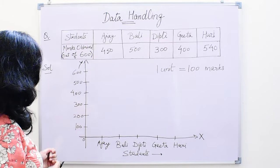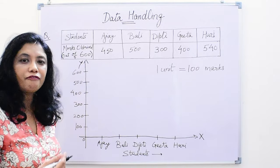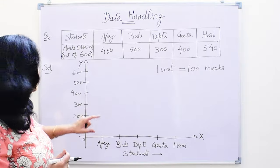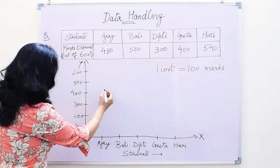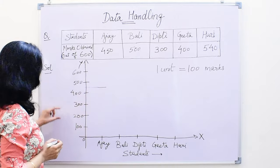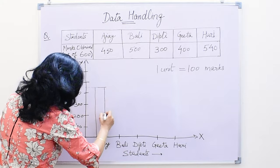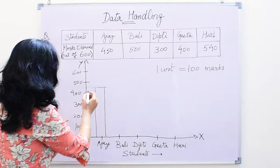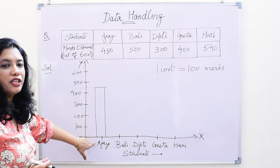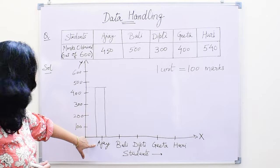Now we will plot the marks. Ajay has got 450 marks, so 450 means it will lie between 400 and 500. You will have graph papers with squares and it will be easy to plot the marks. Here 450 is in the center of 400 and 500. I will make a bar like this — this bar represents Ajay's marks. The height of the bar represents the marks of Ajay. The bar is ending at 450, so we can see that Ajay got 450 marks.